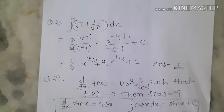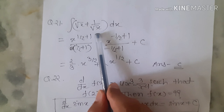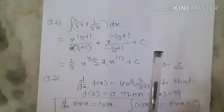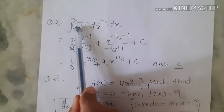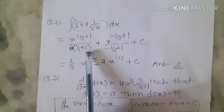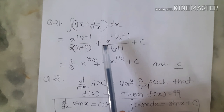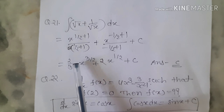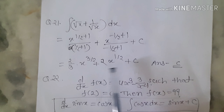Question 21 is a multiple choice question: find the antiderivative of √x + 1/√x. Integral of (x^(1/2) + x^(-1/2)) dx. Applying the power rule: x^(3/2)/(3/2) + x^(1/2)/(1/2) + c = 2/3 x^(3/2) + 2x^(1/2) + c. This matches answer option C.